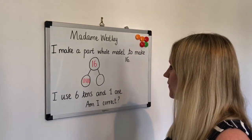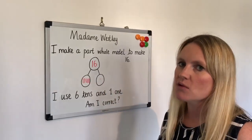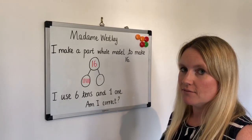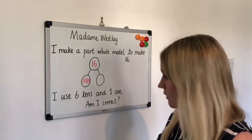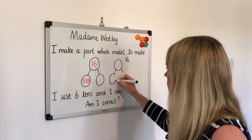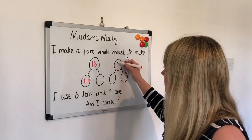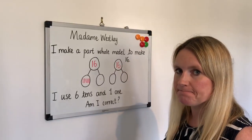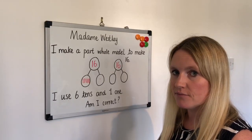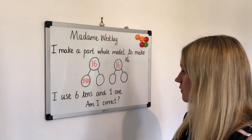Question number 4. This time we're going to be looking at a part-whole model. The lines represent 10 and the dots represent 1. Here's the question: I make a part-whole model to make the number 16 using tens and ones. On your board, draw a part-whole model and show me how you would make 16 using tens and ones. I use six tens and one one — am I correct?